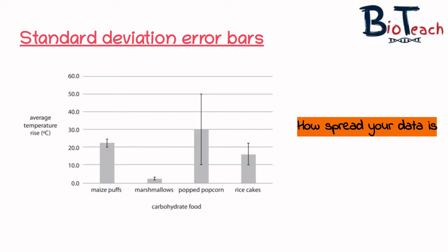A larger standard deviation bar means a larger spread, which basically means the data is more variable from the mean. You can see the difference between marshmallows and popped popcorn — the standard deviation for marshmallows will be much smaller than the popped popcorn standard deviation. Error bars will also allow you to check the reliability of the mean value as a representative number for that data set.